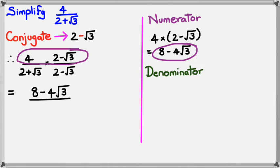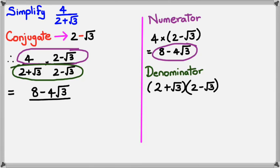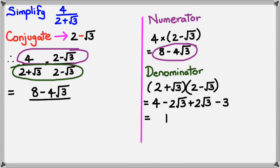For the denominator I have (2 plus square root of 3) multiplied by (2 minus square root of 3). Expanding this as a quadratic I get 4 minus 2 root 3 plus 2 root 3 minus 3, because square root of 3 times square root of 3 is simply 3, and positive times negative makes it negative. Simplifying, the inside terms cancel out and 4 minus 3 gives 1, so the denominator is 1. That means the simplified expression equals 8 minus 4 root 3.